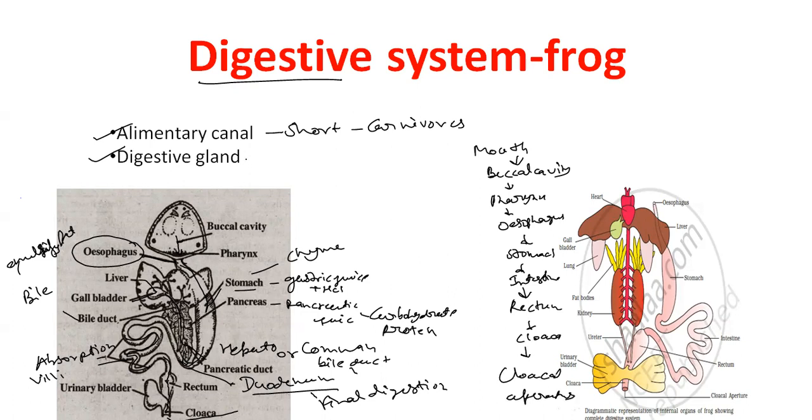And what are the digestive glands in frog? Liver, gallbladder, and pancreas. So this is about the digestive system in frog.